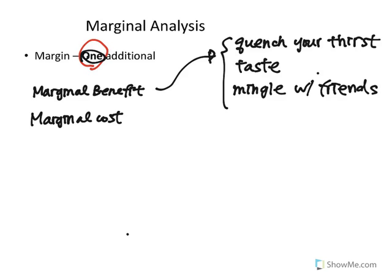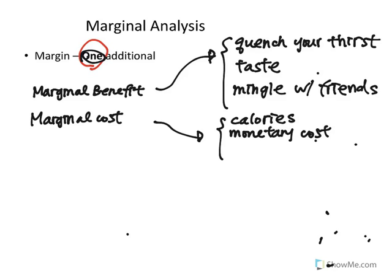What about the cost of drinking one extra can of beer? What are the costs of drinking beer? Well, first of all, calories, right? We don't like the calories, because the more calories you consume, the longer you will have to stay on the elliptical next day. And maybe also the monetary cost — you're at the party, but you still have to pay for the beer. And after you drink some beer, you probably start to feel tipsy, and you may feel sick, and perhaps you cannot drive later. And then you will have to wake your parents who are already sleeping, and they are going to be unhappy about that.